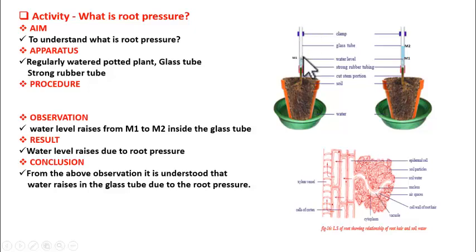Pour water into the glass tube such that the water level is above the strong rubber tube. Mark the level of water in the glass tube, let's say it is M1. Then keep this whole setup undisturbed for two to three hours.